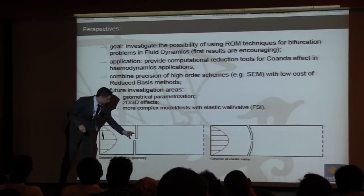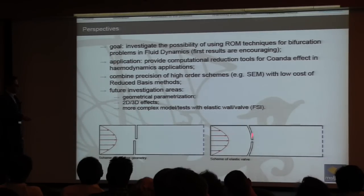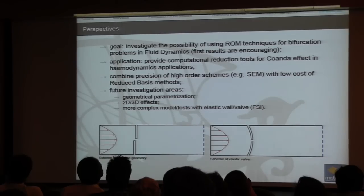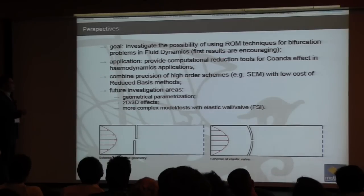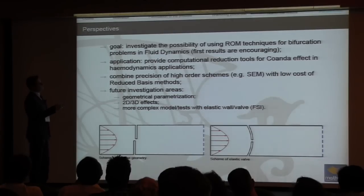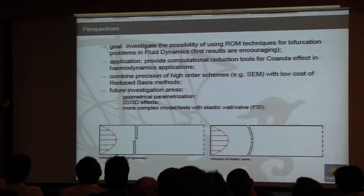We are investigating how the Coandă effect is delayed or disappears in three dimensions due to geometrical parametrization, including uneven orifice positioning and fluid-structure interaction on the mitral valve model. We believe reduced order computational tools can detect the Coandă effect in hemodynamics applications and enable bifurcation and instability limit detection.